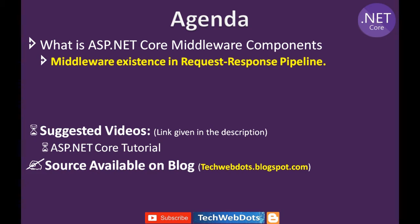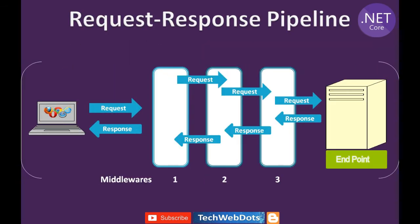All sources are available on my blog. In the request processing pipeline, you can see on the screen that when a browser sends a request to the server, there are several middleware components in between. There is middleware one, middleware two, and middleware three. Middleware one must allow the request to move to middleware two, and only then will it move forward to middleware three.